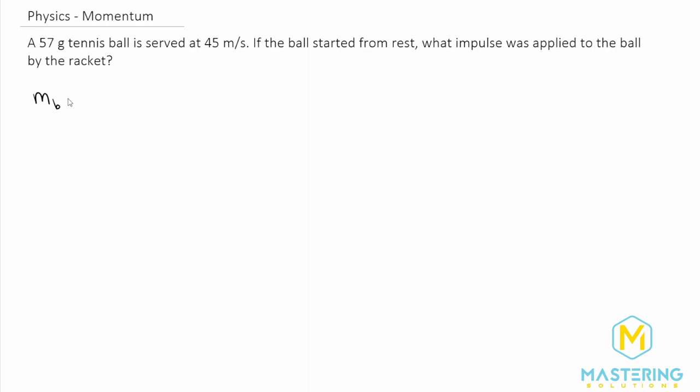First off, let's write a list of the variables that we know. We know the mass of the tennis ball is equal to 57 grams. Now they're trying to make the question a little bit tricky. One of the ways they're doing this is by some word problem tricks here - they're not giving us the SI units for the mass of the tennis ball, so we have to convert that ourselves.